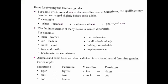The feminine gender of many nouns is formed differently. For example: man and woman, sir and madam, uncle and aunt, husband and wife, headmaster and headmistress, hero and heroine, landlord and landlady, bridegroom and bride, nephew and niece. These are all masculine and feminine gender nouns.